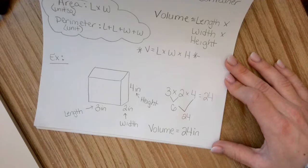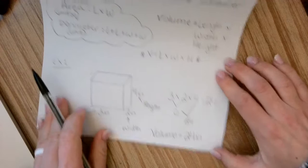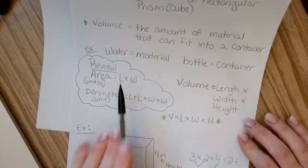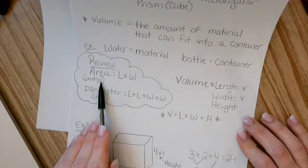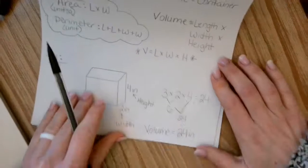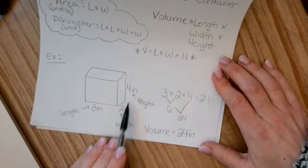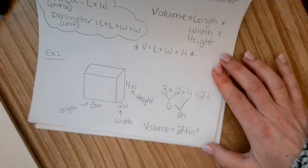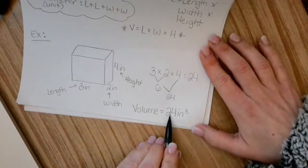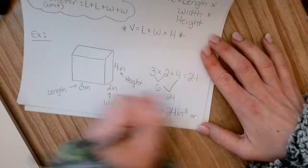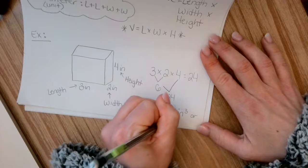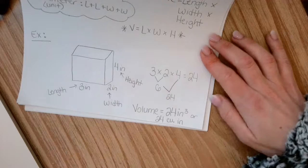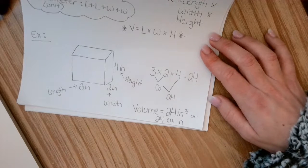If you said cubed, then you are correct. So just like area, we are multiplying two measurements. So we have the little two as our exponent. With volume, we are multiplying three measurements. So we have a little three as our exponent. So you can write your answer like that, or you can even write it out like this. The abbreviation for cubed is CU. And then we would put our label. And that's our answer.